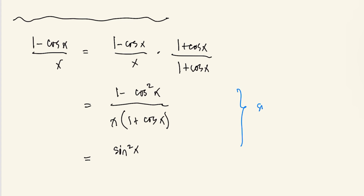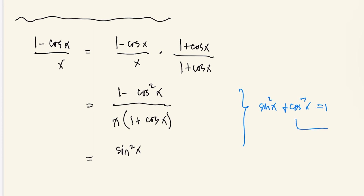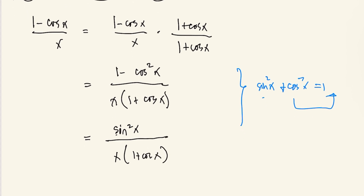Recall that sine squared x plus cosine squared x equals 1, so 1 minus cosine squared x is sine squared x. This gives us sine squared x all over x times 1 plus cosine x. We can split sine squared x into sine x times sine x and distribute the denominator.